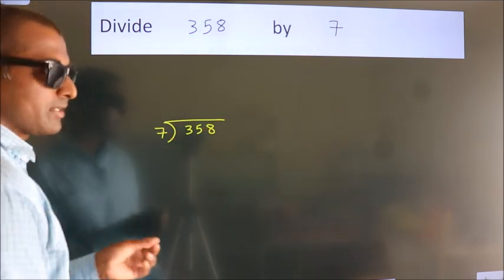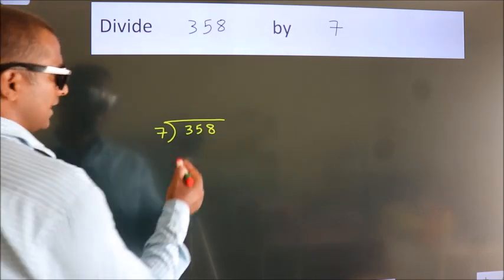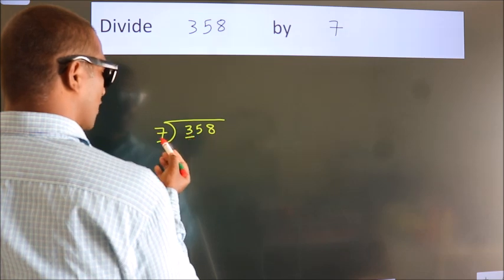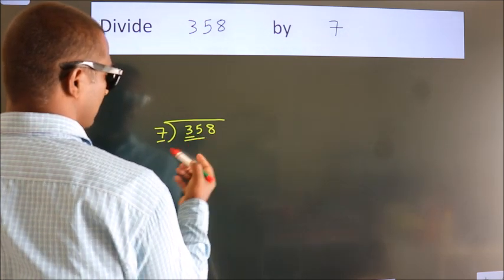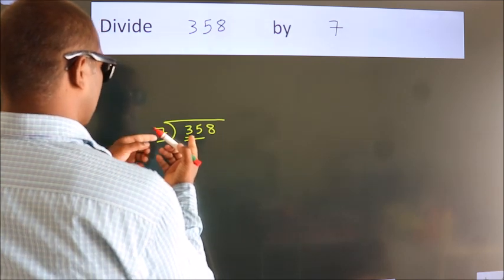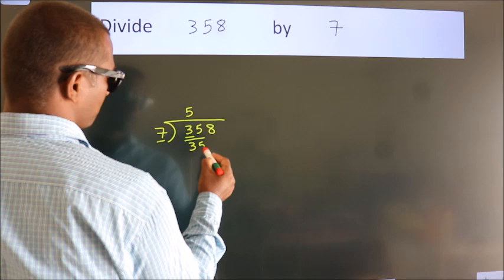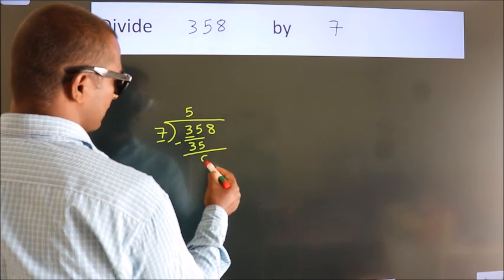This is your step 1. Next, here we have 3. Here 7. 3 smaller than 7. So we should take 2 numbers. 35. When do we get 35? In 7 table. 7 fives, 35. Now we should subtract. We get 0.